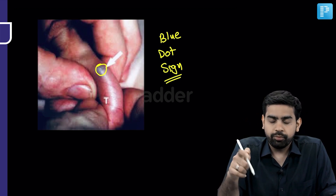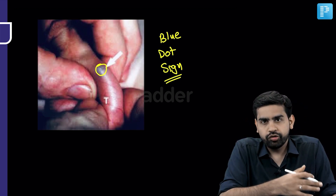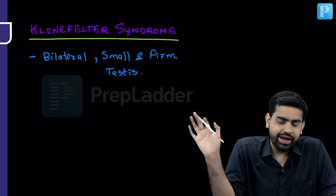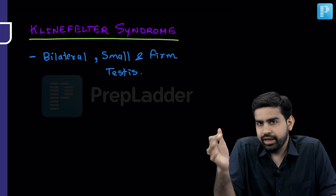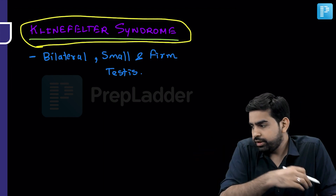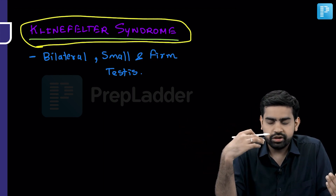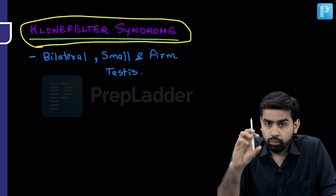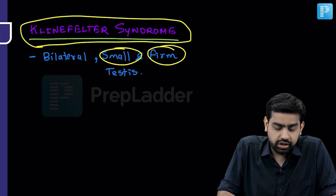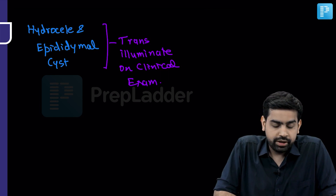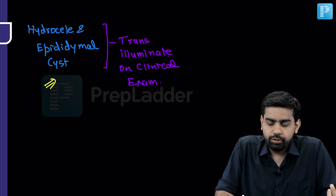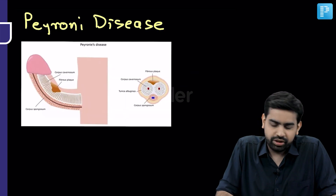The key difference: testicular torsion is a surgical emergency, whereas torsion of the hydatid of Morgagni is managed conservatively — just give NSAIDs and painkillers and the patient will be fine. In Klinefelter syndrome, on examination you find small and firm bilateral testes. Hydrocele and epididymal cysts can be palpated and show transillumination on torch light examination.